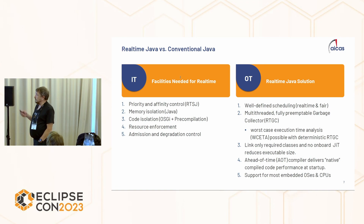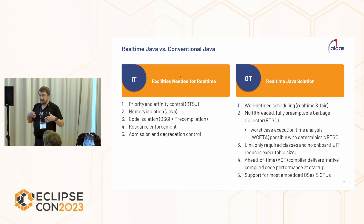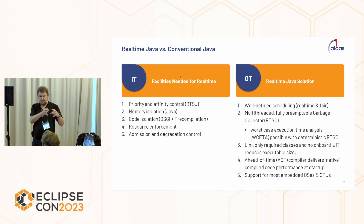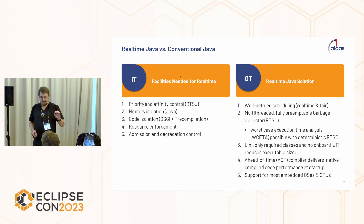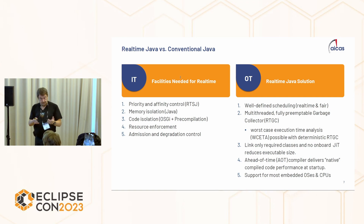To address these issues, we use something called the Real-Time Specification for Java, which provides the features we need for real-time programming. One is a deterministic garbage collector. There are also different ways of structuring code — instead of writing a loop for an event, you can define an event handler so when something happens, that piece of code runs, making your analysis much simpler. That event can be a timing event — if I want to do something every 10 milliseconds, I set up a timer. That makes worst-case execution time analysis a lot simpler because I only need to look at that specific code.